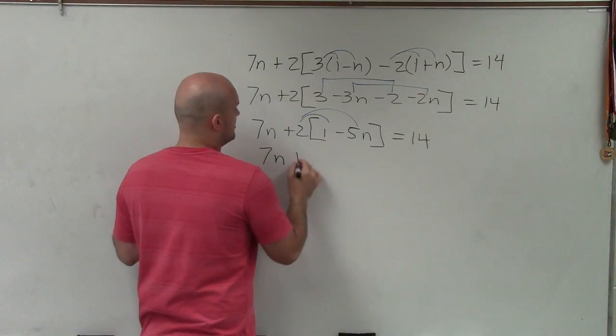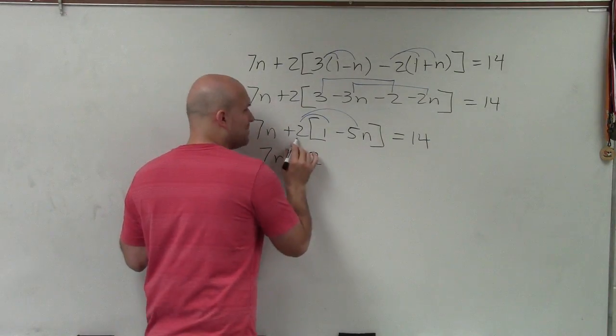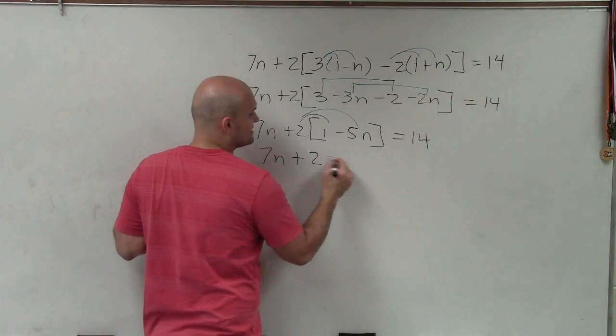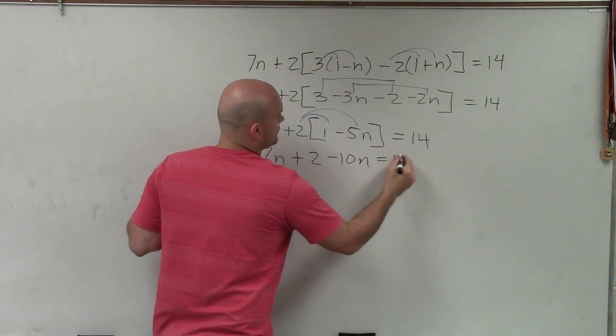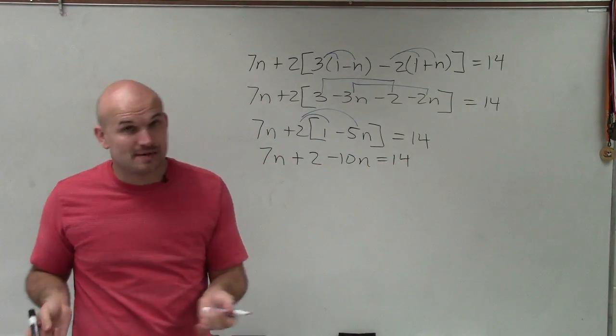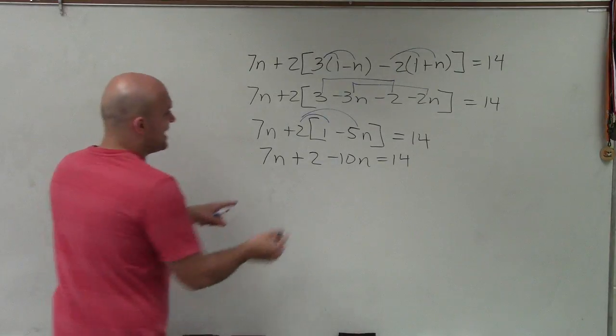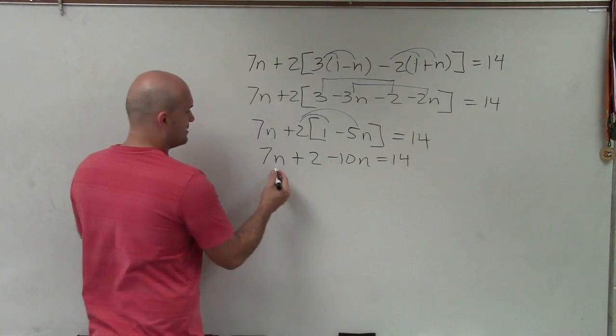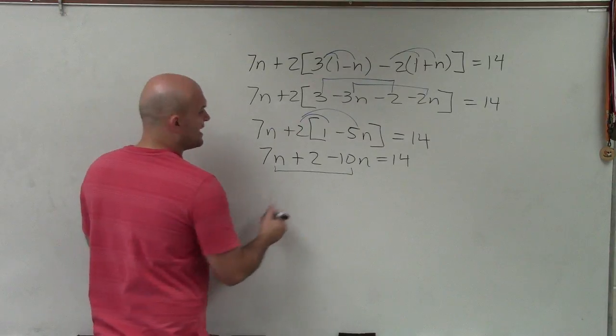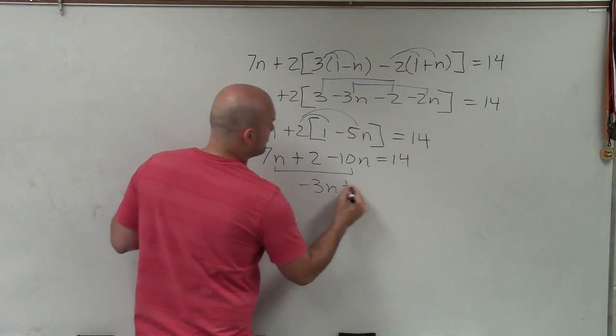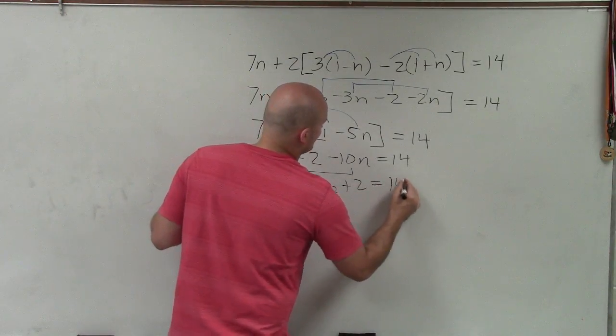So therefore, I have 7n plus 2 times 1 is 2. And positive 2 times negative 5n is negative 10n equals 14. And I'm still not at a two-step equation yet, because I can now combine these two n's. 7n minus 10n is negative 3n plus 2 equals 14.